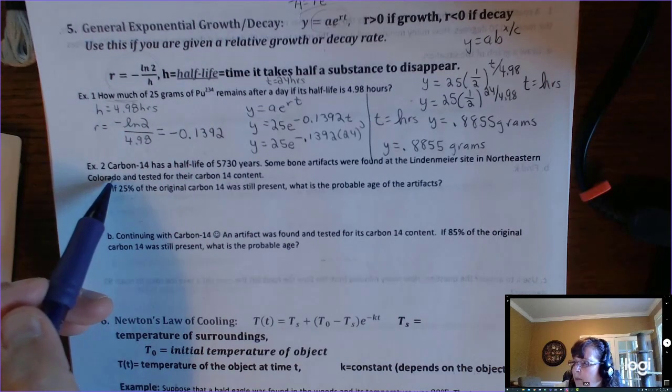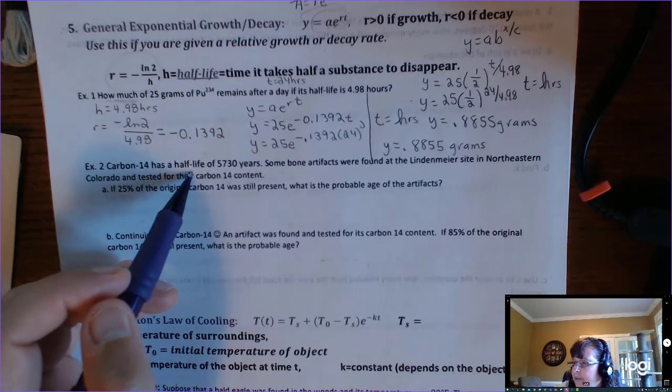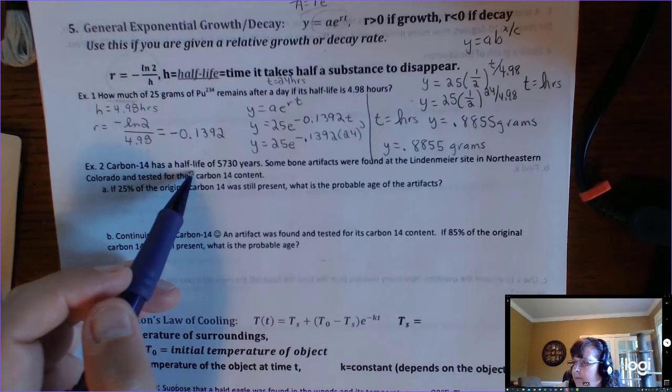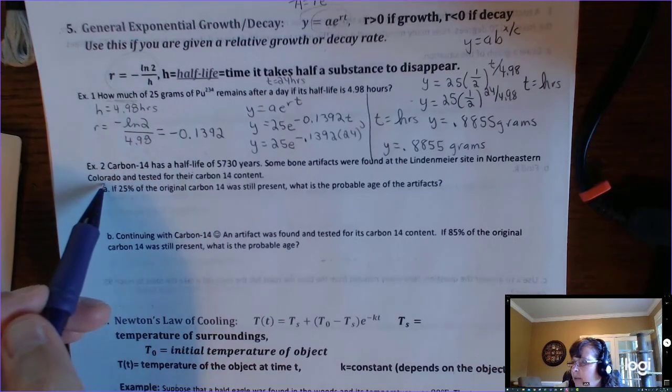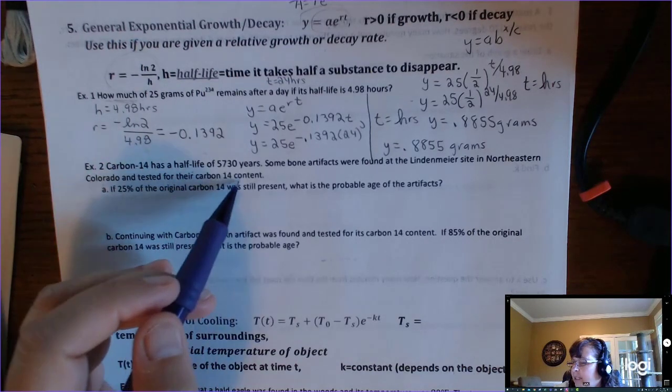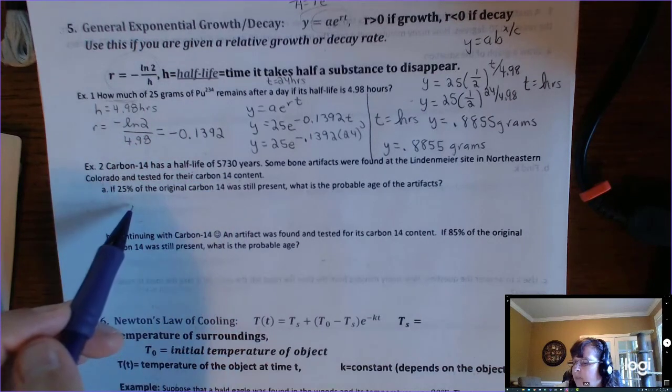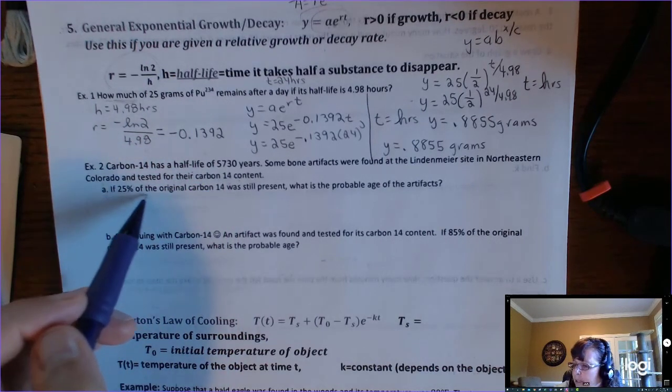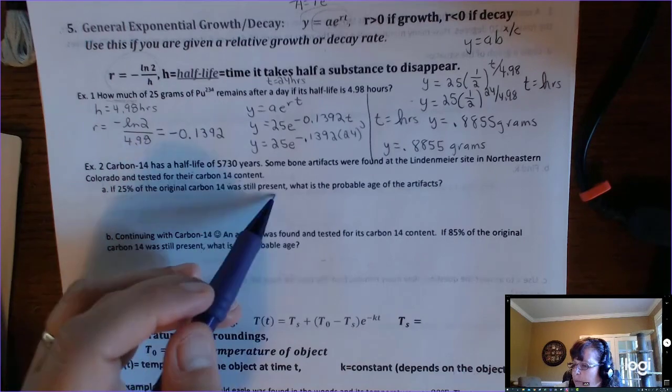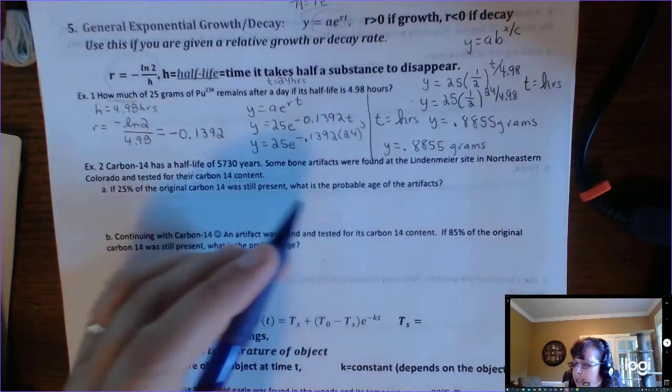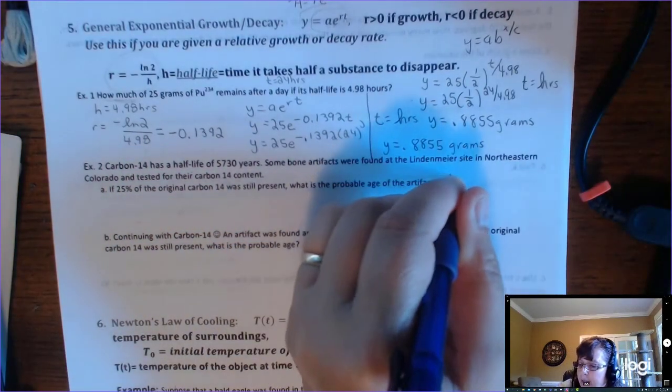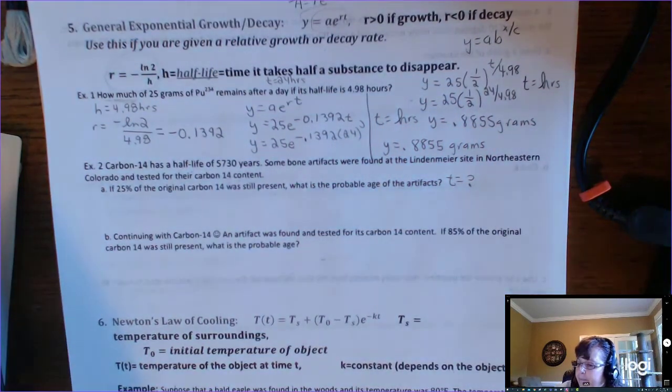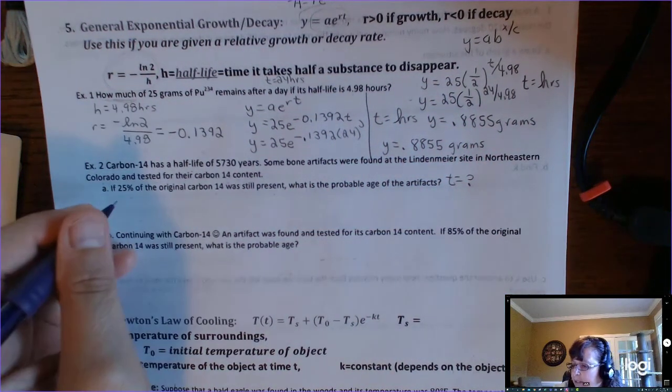Okay, example two. Carbon-14 has a half-life of 5,730 years. Some bone artifacts were found at the Lindemeyer site in northeastern Colorado and tested for their carbon-14 content. Okay, so we've got a little twist here. We're looking for the time.